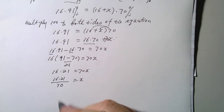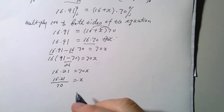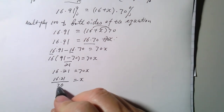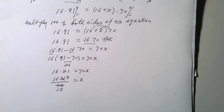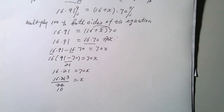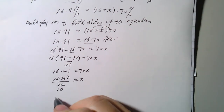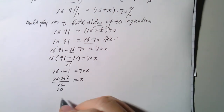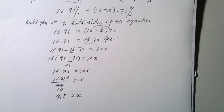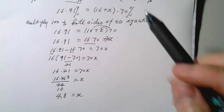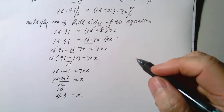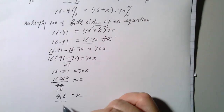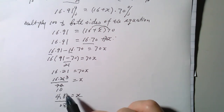So x equals 16 times 21 divided by 70. Reduce 70 and 21 by 7 to get 10 and 3. So x equals 3 times 16 divided by 10, which is 48 divided by 10, which equals 4.8. That tells us if you have 16 ounces of 91% rubbing alcohol and want to dilute it to 70%, you need to add 4.8 ounces of distilled water.